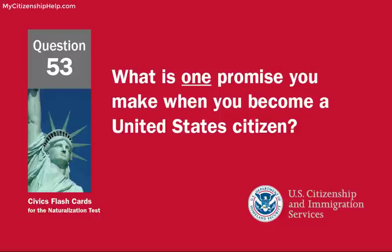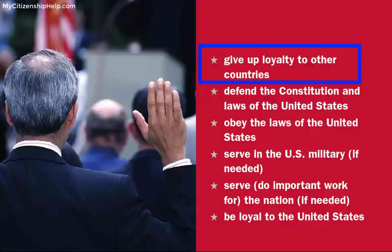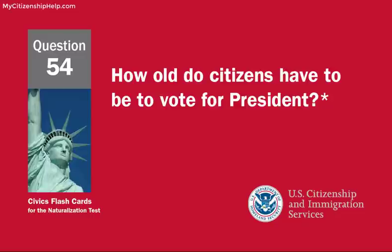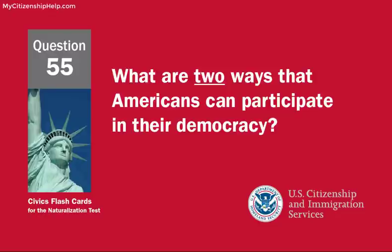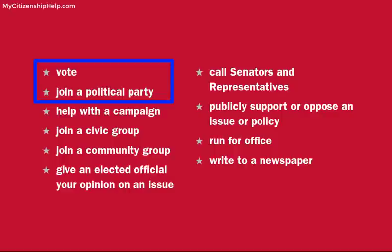What is one promise you make when you become a United States citizen? Give up loyalty to other countries. How old do citizens have to be to vote for president? What are two ways that Americans can participate in their democracy? Vote, join a political party.